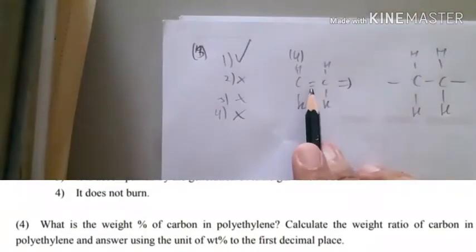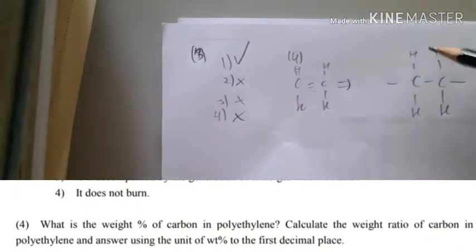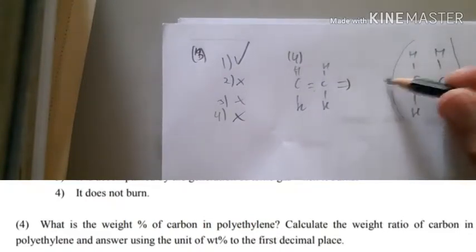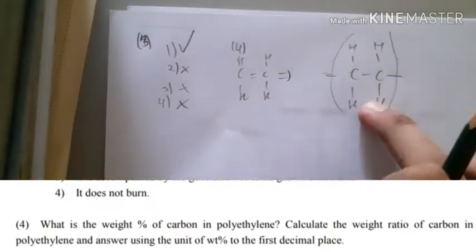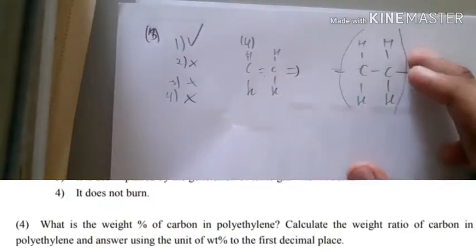You see that this bond comes out and it wants to join with another ethylene. That's why it's polyethylene—ethylene, ethylene, ethylene, ethylene. Poly means many, more than one.